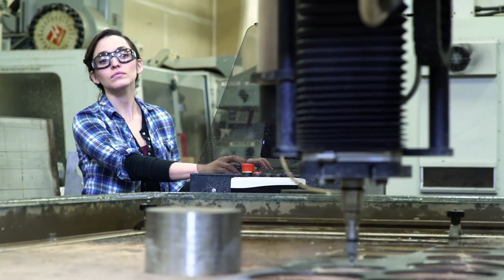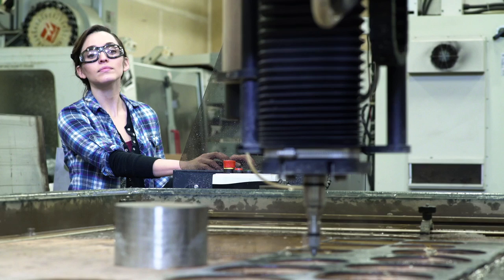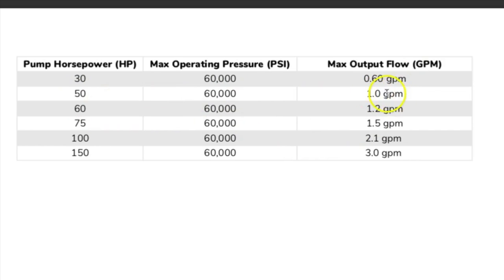Let's review a few of the most common sized pumps and typical outputs. Starting with the standard 60k chart where you can see pump horsepower, max operating pressure, and max flow. Starting with the 50 horsepower pump: it runs at 60,000 psi, and what we are really looking for is that max output flow of 1 gallon per minute.